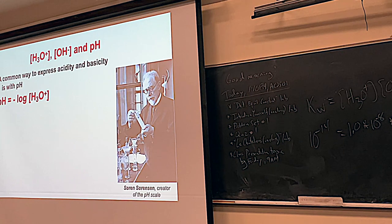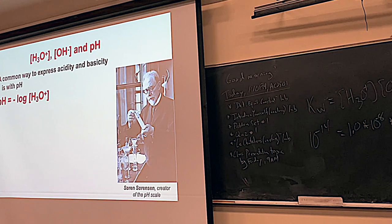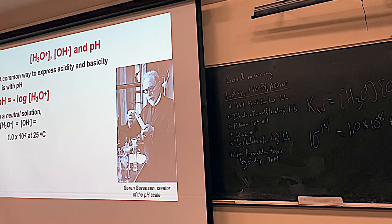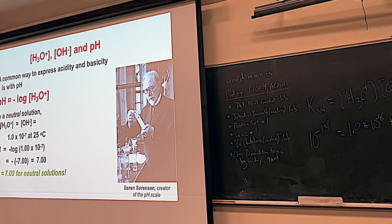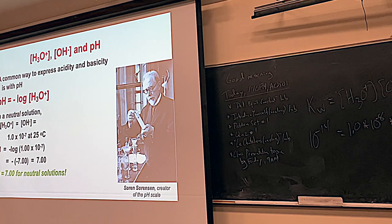Sorensen created the pH system. pH equals negative base-10 log of the hydronium concentration — a much easier way to talk about acidity than comparing numbers like 10⁻³ to 10⁻¹¹. For the neutral solution where hydronium is 10⁻⁷, pH equals 7. So pH 7 means neutral. We'll start using this to talk about when things are acidic and basic. We'll do more with pH on Wednesday. Have a great day.